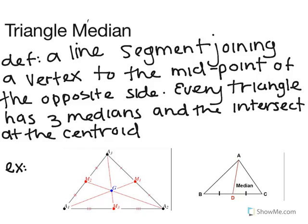The next topic is the triangle median. The definition is a line segment joining a vertex to the midpoint of the opposite side. Every triangle has three medians and they intersect at the centroid.